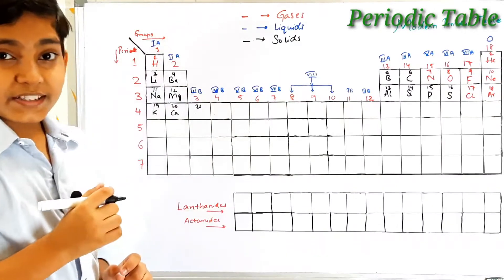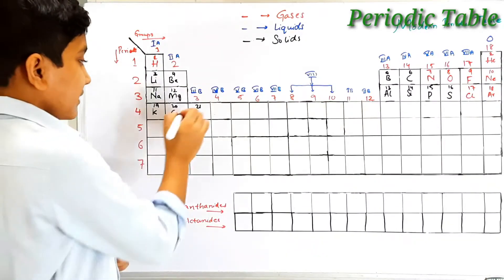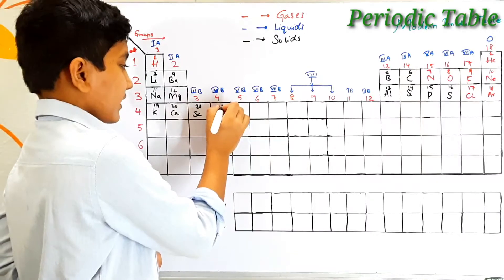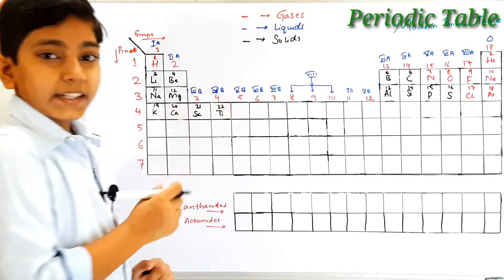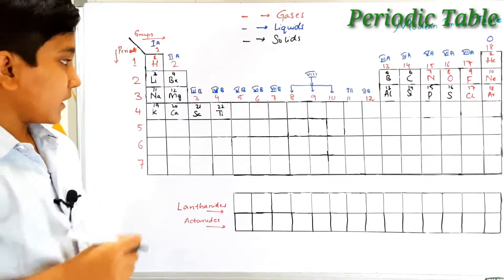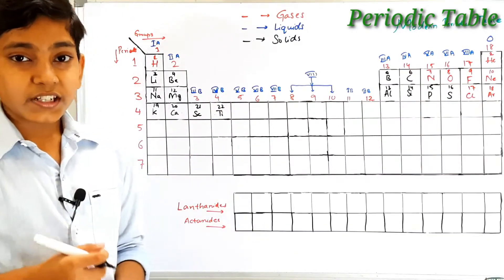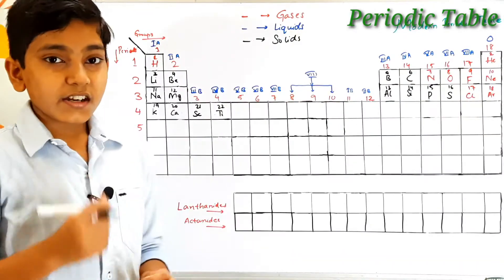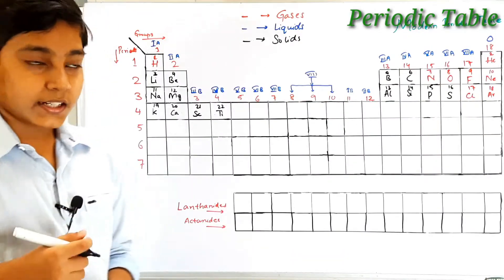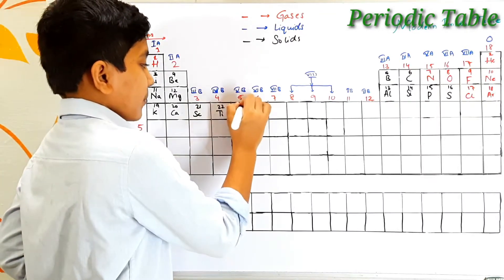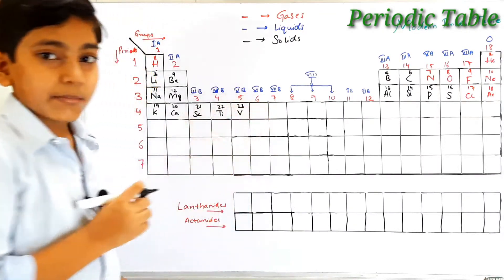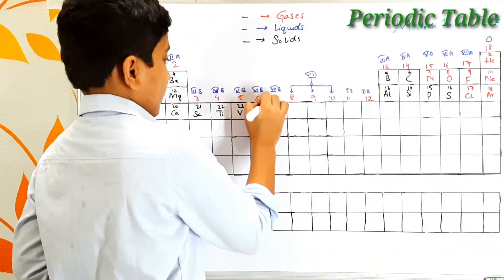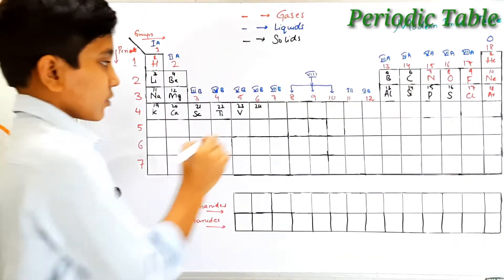Atomic number 21 is scandium — its symbol is Sc. Then atomic number 22 is titanium, which is the element found in larger proportion on the moon — the natural satellite of the earth. Atomic number 23 is vanadium — its symbol is V. Atomic number 24 is chromium.